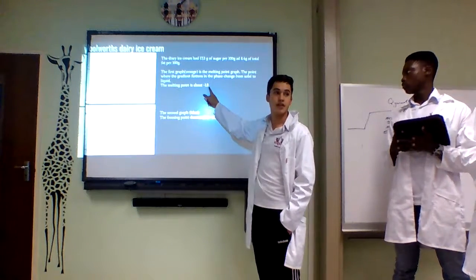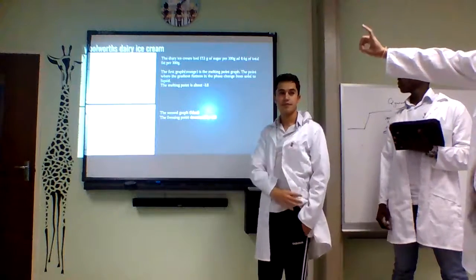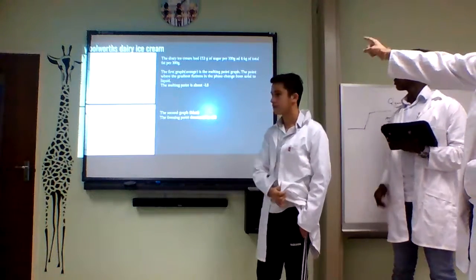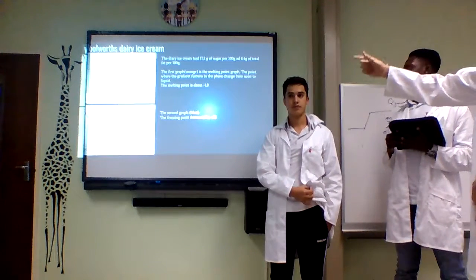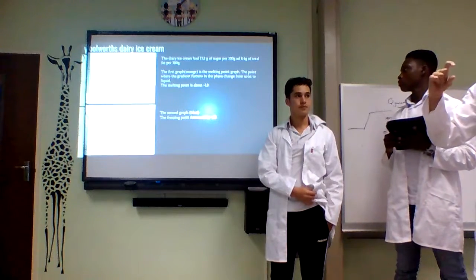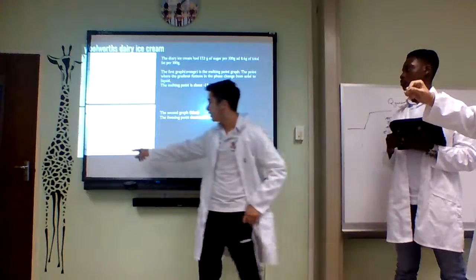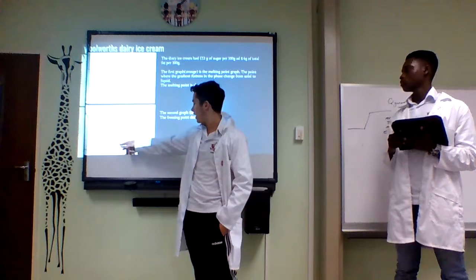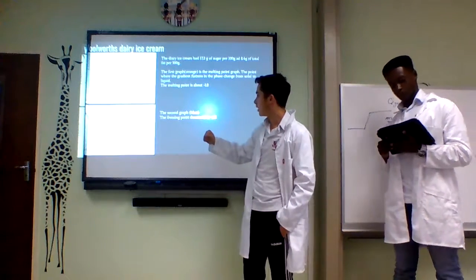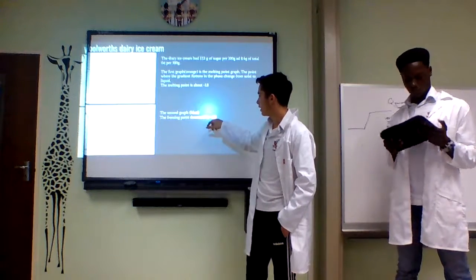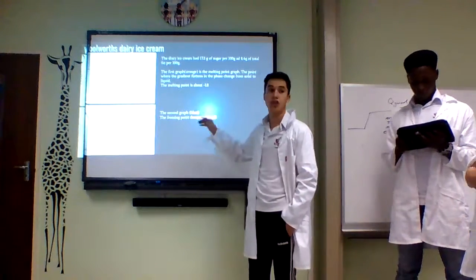The melting point should be significantly lower and it is negative 1.8 degrees Celsius. What was interesting was this one had slightly lower sugar and fat percentages per 100 grams, which is why you would expect it to be slightly lower. It's still very close to the Madagascan. Then this is the freezing function. As you can see, it's obviously very similar to the one before, but we were able to deduce that negative 3.8 degrees Celsius was the new freezing point.